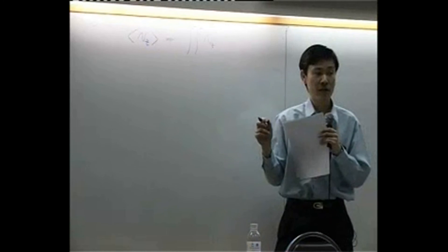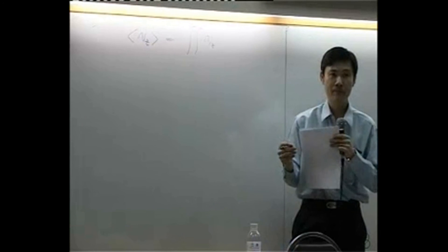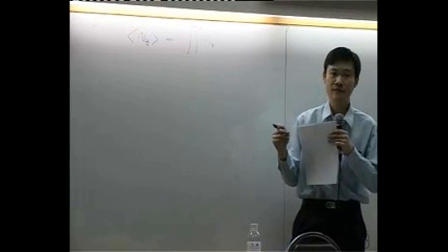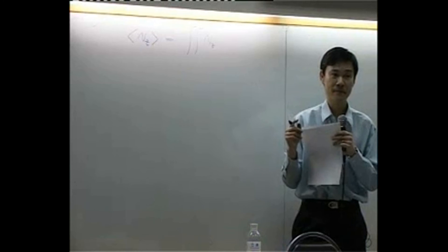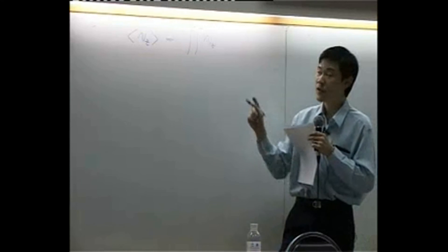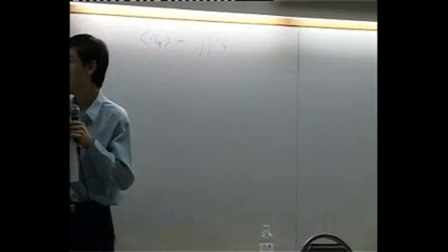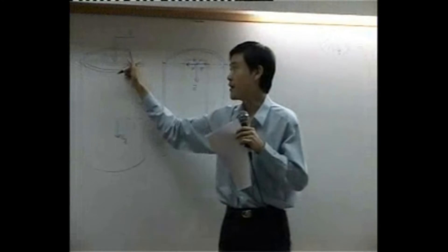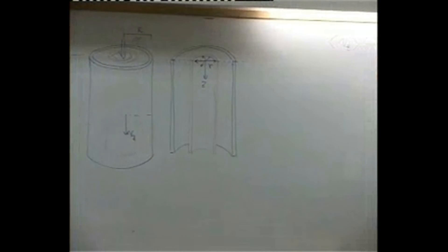You integrate with respect to r, and you integrate to find the cross-section area. So you integrate from center to R and integrate all the angle. So zero to R, zero to 2π: vz r dr dθ.